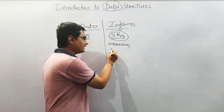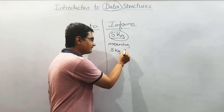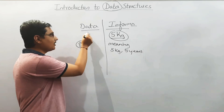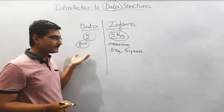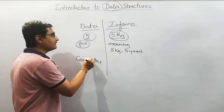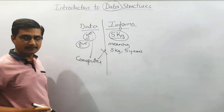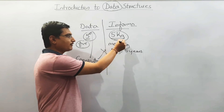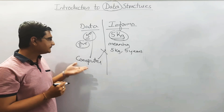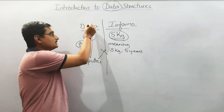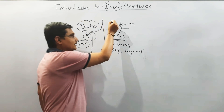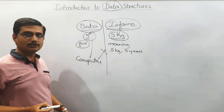If I say phi kg, it will be phi kg only. If I say phi years, then it is phi years only. But when I write just 'phi' by itself, it does not mean anything. One should know that computers will deal only with data, not with information. For us it is information; for the computer it is just data. That is the most important thing we need to understand.